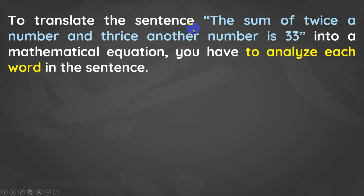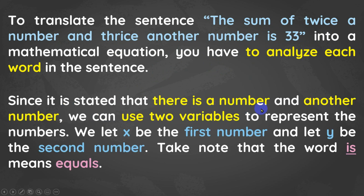So now, to translate the sentence 'the sum of twice a number and thrice another number is 33' into a mathematical equation, you have to analyze each word in the sentence. Since it is stated that there is a number and another number, we can use two variables to represent those numbers. We let x be the first number and y be the second number.